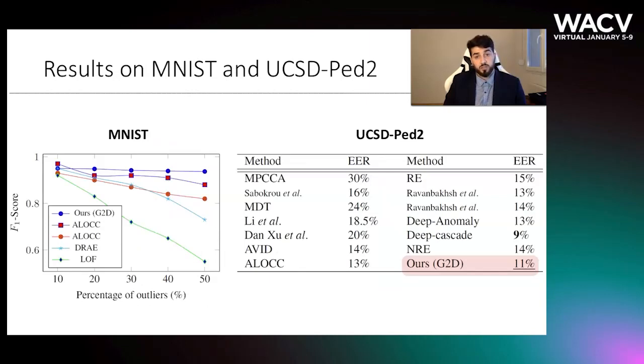In this slide, we can see experimental results obtained on two different datasets. The first one is MNIST. The first figure shows the comparison of F1 score on MNIST dataset for different percentages of outlier samples. This figure confirms that our method has a better performance in terms of F1 score compared to other state-of-the-art methods.